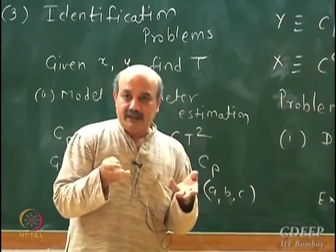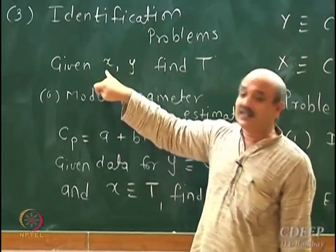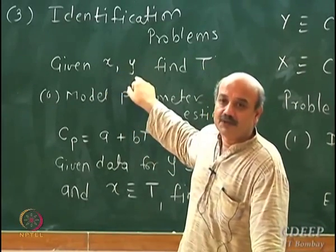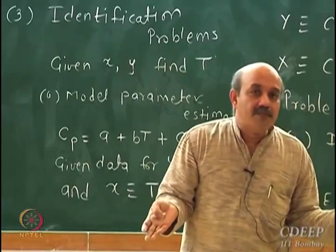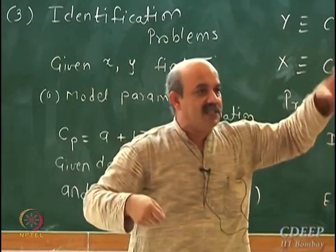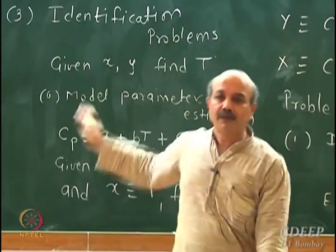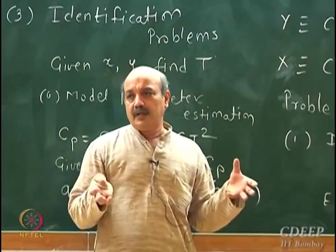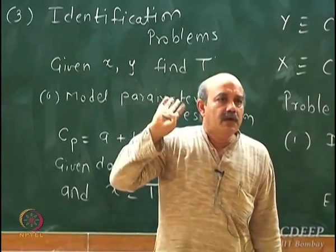You are trying to find out the operator, knowing Y as an effect and X as a cause. The operator T operates on X to give you Y. So you know cause and effect and you want to find out the operator. Another example is estimation of transfer functions in process control: you give an input perturbation, measure the output, and try to fit a transfer function to that data. All these are examples of identification problems. The bulk of our work in this course is going to be inverse problems, and we will also look at identification problems to a large extent.